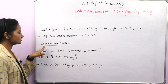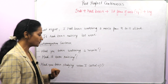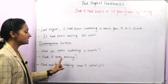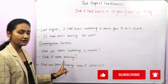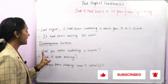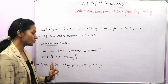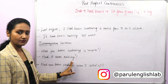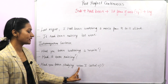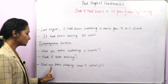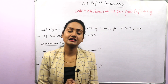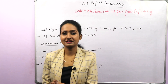Had you been watching a movie? Had you not been watching a movie? Had it been raining? Had it not been raining? You can make these sentences with contractions also: 'Hadn't you been watching a movie?' 'Hadn't it been raining?' 'Had you been studying when I called up?' 'Had you not been studying when I called up?' 'Hadn't you been studying when I called up?' That's how you can make positive, negative, and interrogative sentences in past perfect continuous tense.